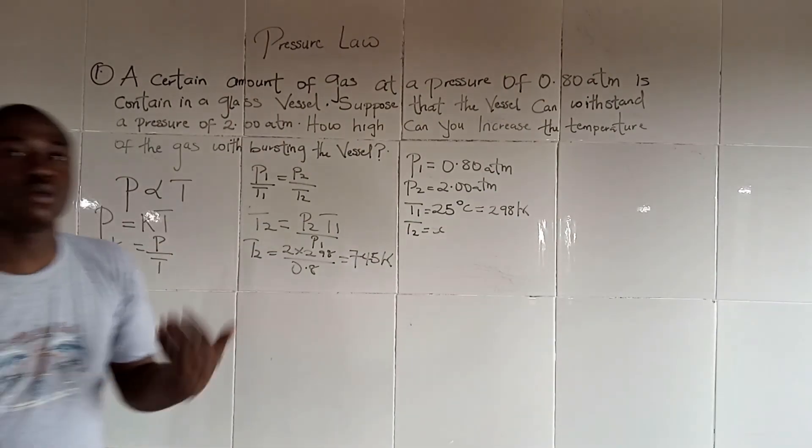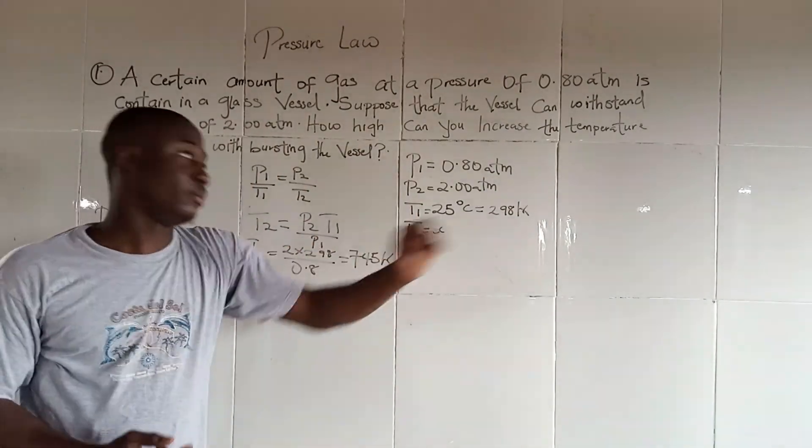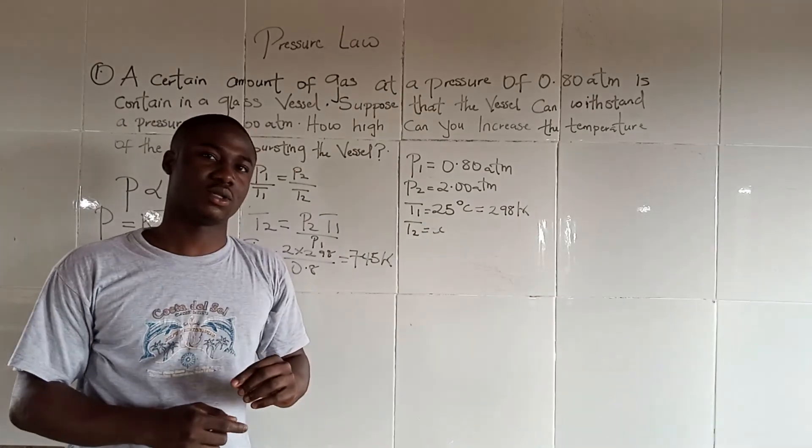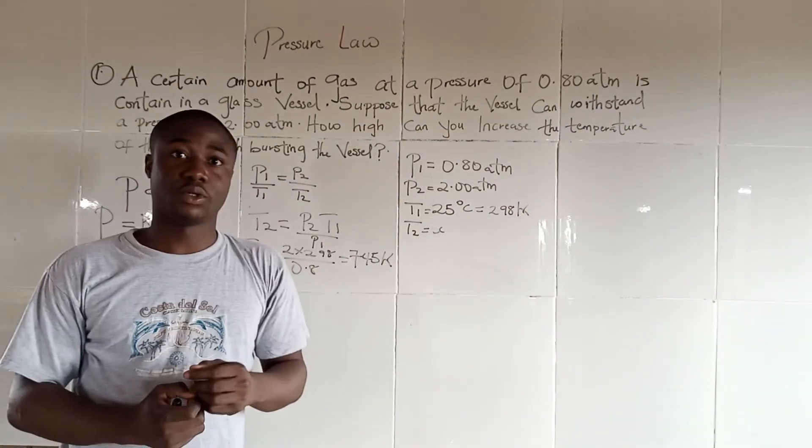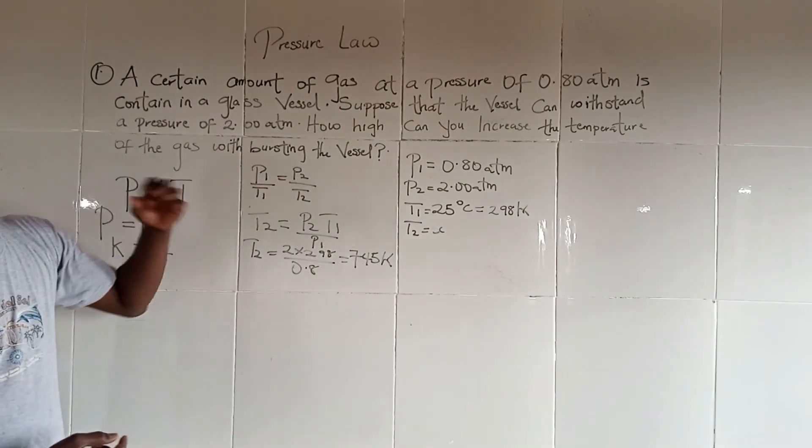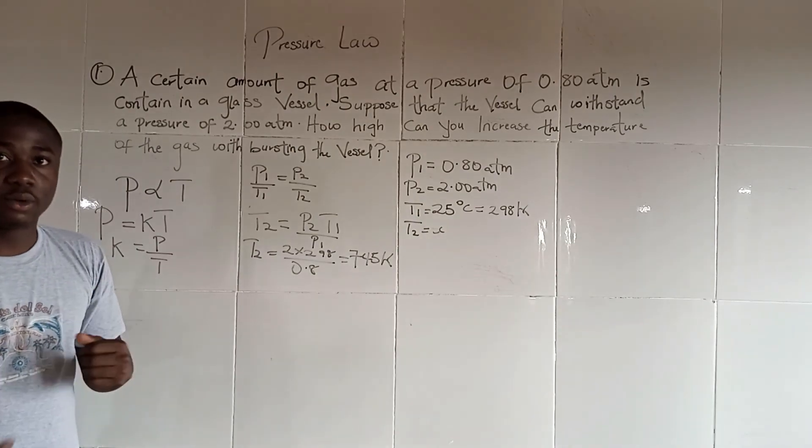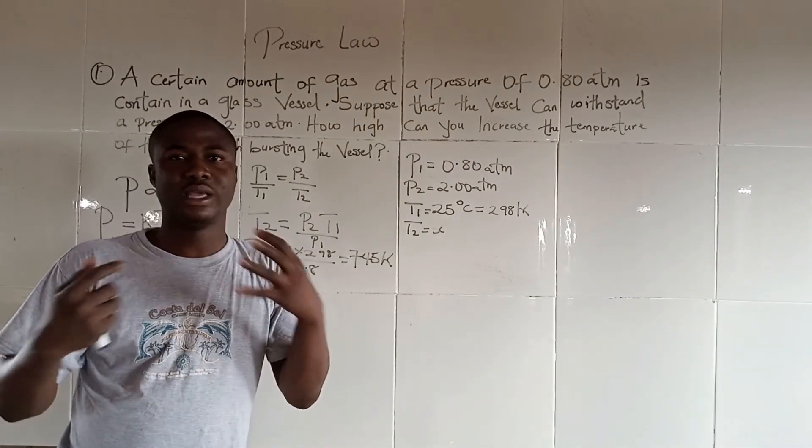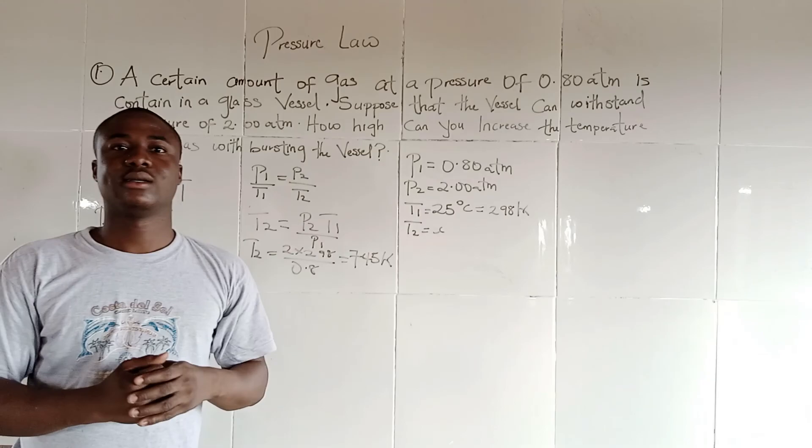It should be noted that the reactor was maintained in the vessel, so our T1 comes from 25 degrees Celsius, which is the room temperature. This is how to solve this question written on the board. The pressure law is also called the Amontons law. Thanks for watching.